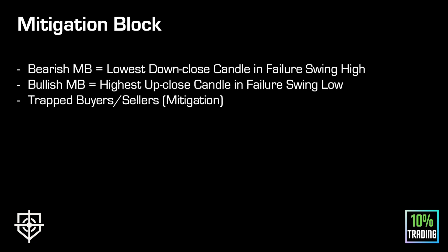Let's start with mitigation blocks. With these arrays I want you to have a good understanding of every single array — how it forms, what it looks like, and how you can use it to frame entries. A bearish mitigation block is the lowest down-close candle in a failure swing high. A bullish mitigation block is the highest up-close candle in a failure swing low.